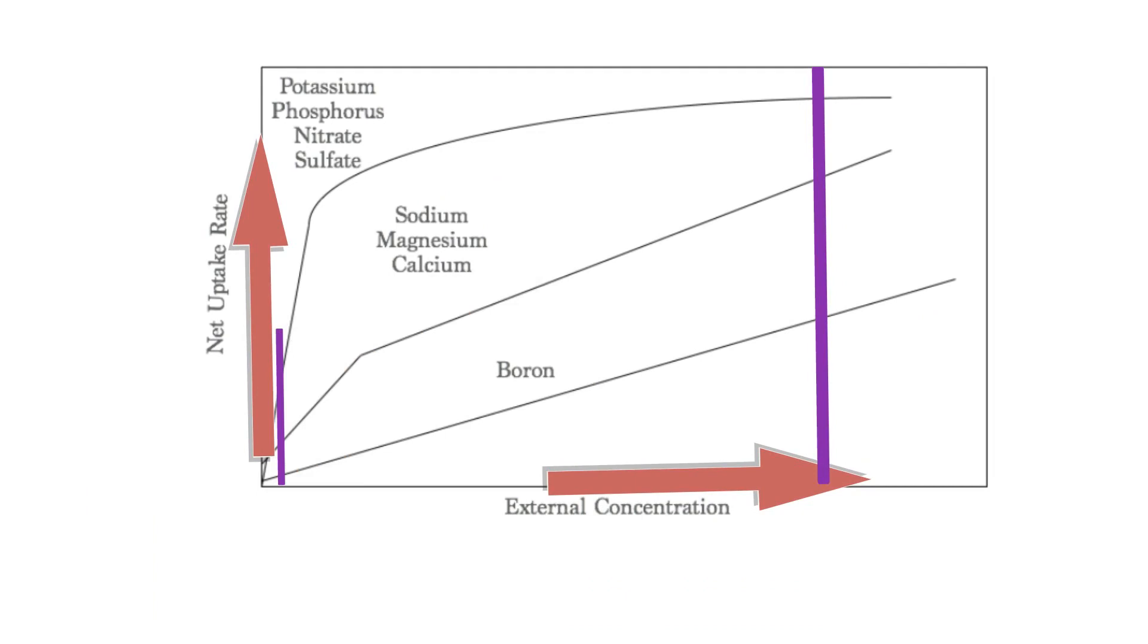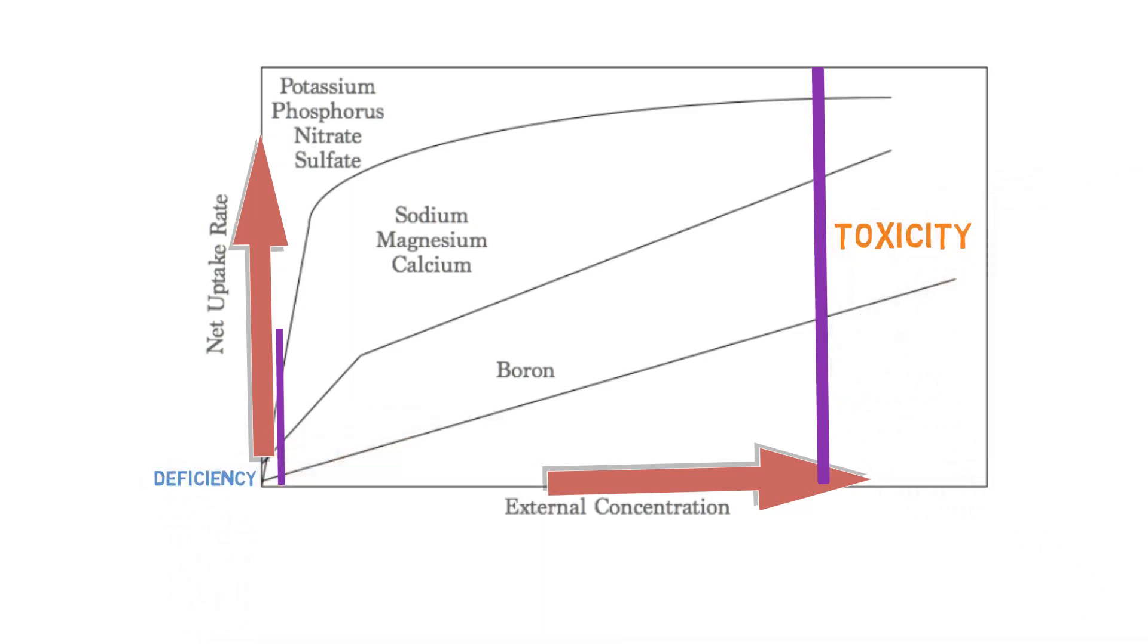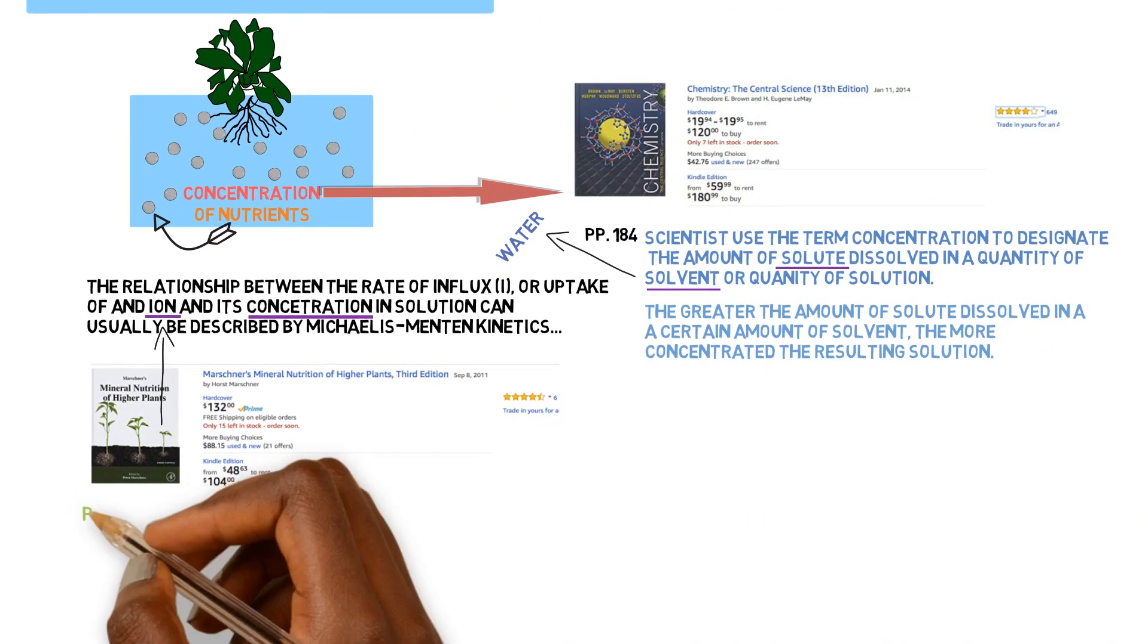And there's a threshold, a limit to the amount of nutrient concentration that can be present in the solution before the plants have problems taking it up, before they can't take it up in sufficient quantities. Pay attention.